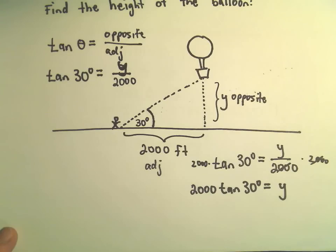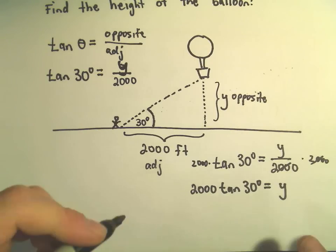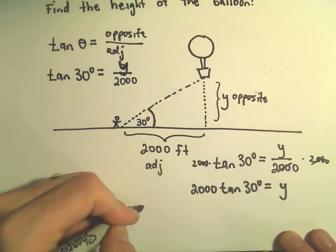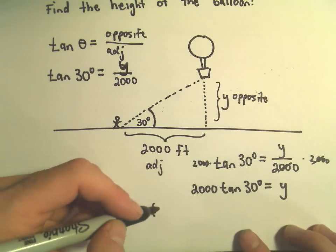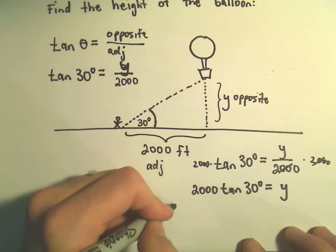Tangent of 30 degrees is approximately 0.577.